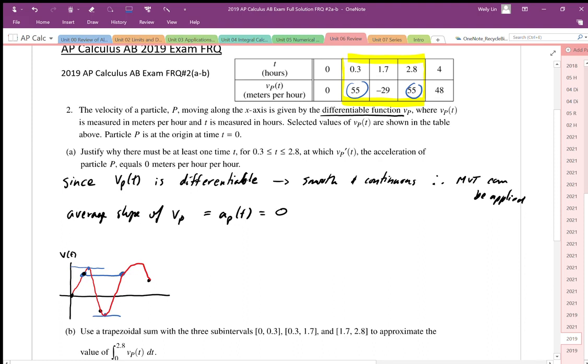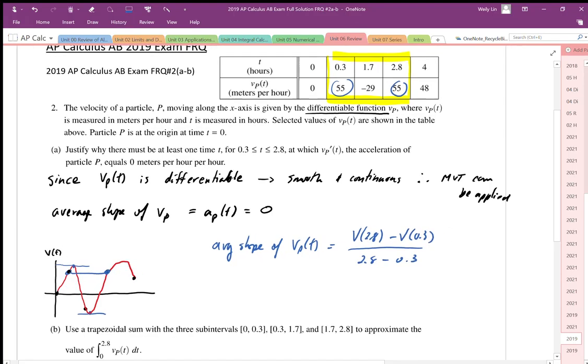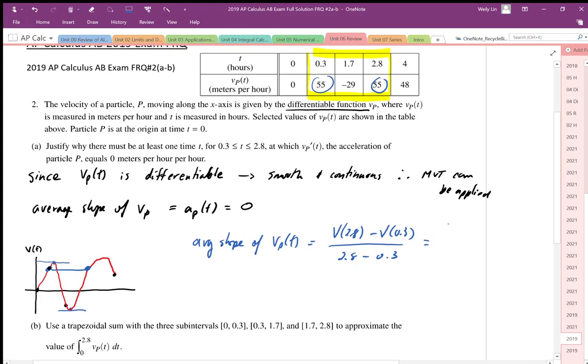We can say that the average slope of V_P(t) equals V at 2.8 minus V at 0.3, over 2.8 minus 0.3. That's equal to 55 minus 55 over 2.8 minus 0.3, which equals zero.